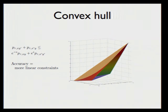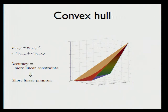The only problem is that it's a large linear program. But we show that you can combine these constraints into a short linear program in a new set of variables, keeping one variable for every pair of inputs. Therefore the size of the program is only proportional to the size of the truth table of the function being computed.